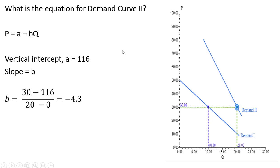When we go from the vertical intercept to the price, you've got $30 minus $116. And then when we move over from 0 to 20 over here, the number of units that consumers buy, we'll have 20 minus 0 in the denominator. Simplifying, we get a slope of minus 4.3. So putting everything together, this is the equation for Demand Curve 2. That's it.